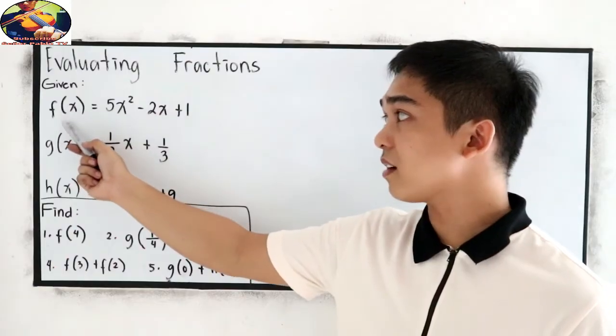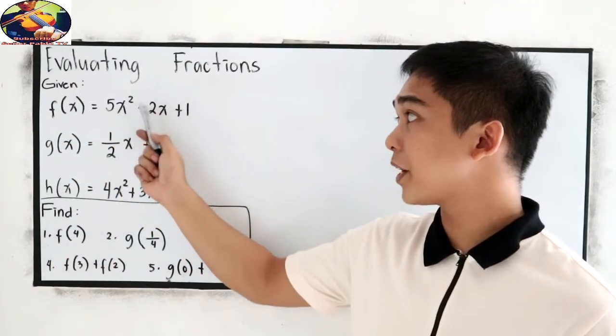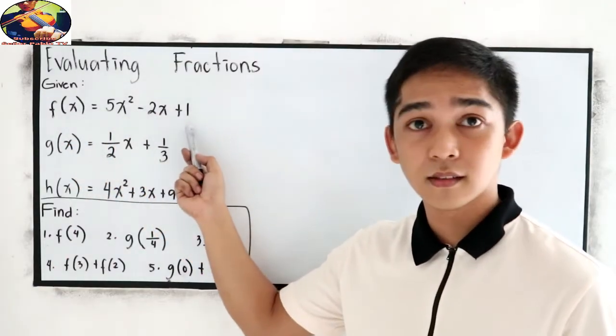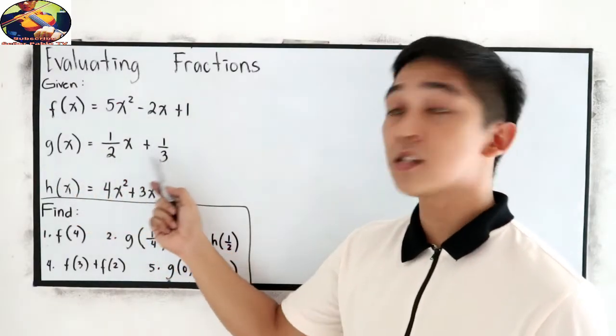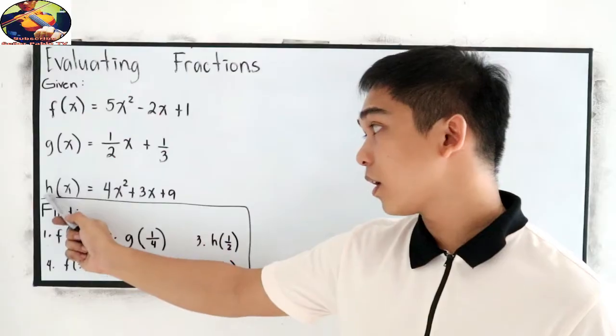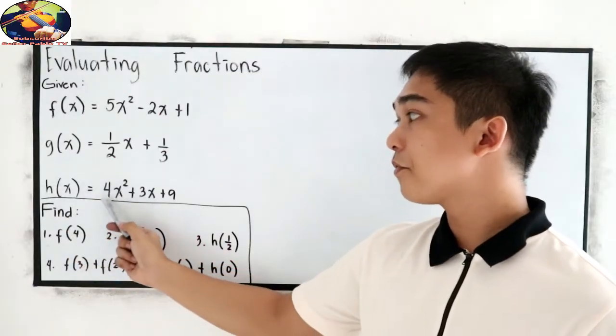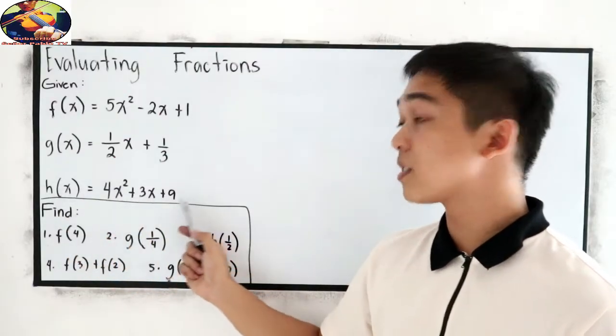Given f(x) is equal to 5x squared minus 2x plus 1. g(x) is equal to 1 half x plus 1 third. h(x) is equal to 4x squared plus 3x plus 9.